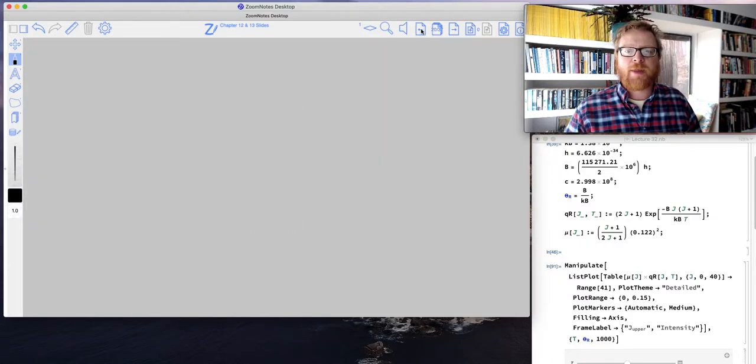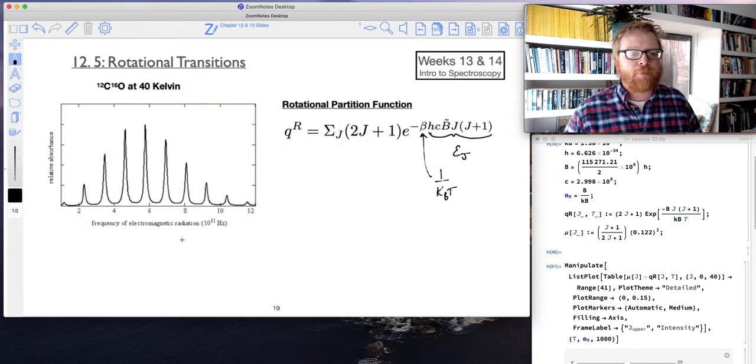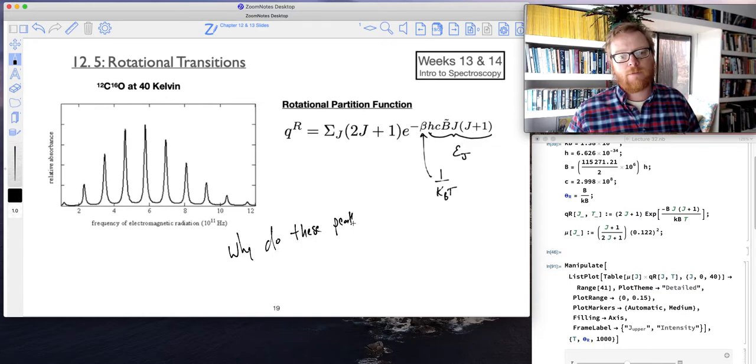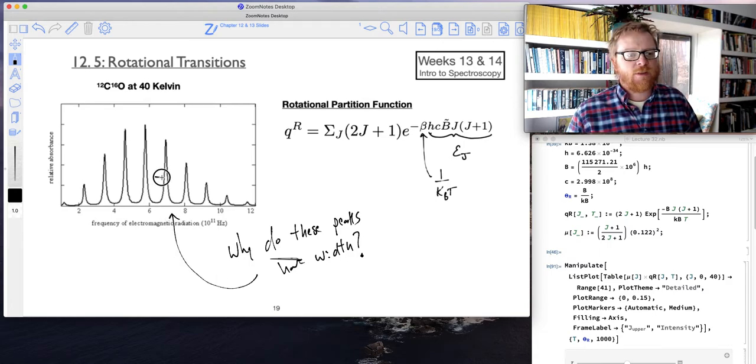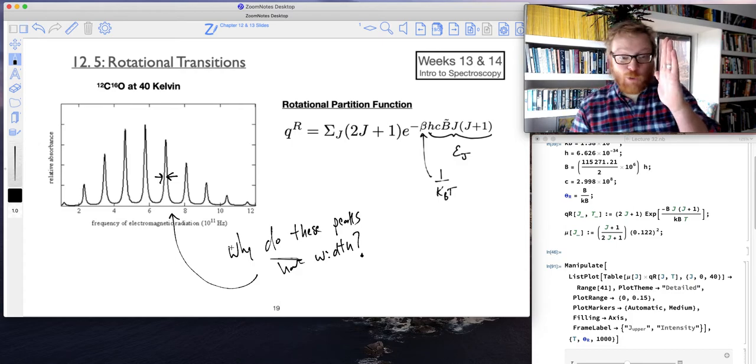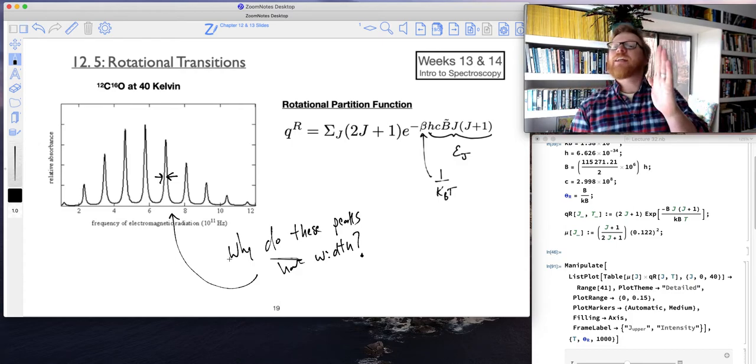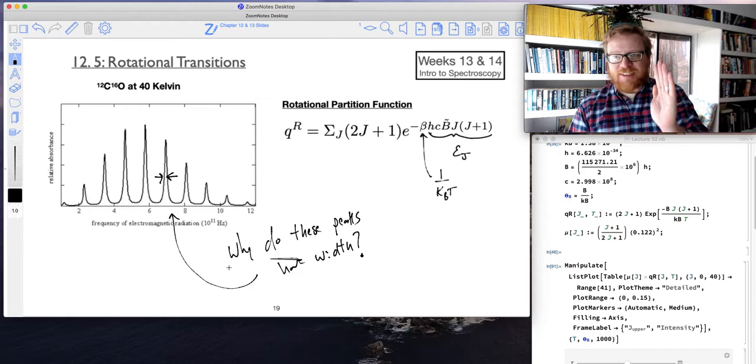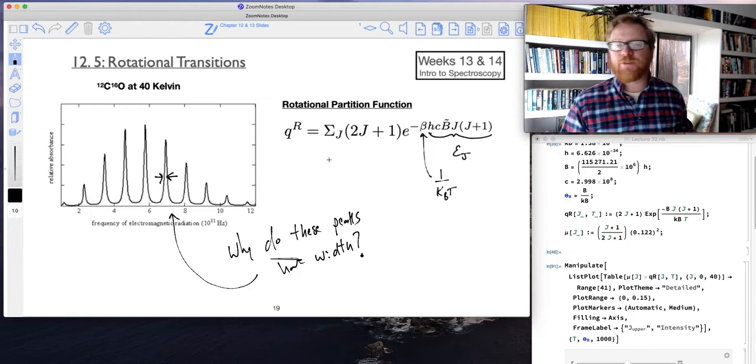I'm going to move past the rotational, and now I want to talk about why the width. Why do these peaks have width? So we always talk about how in quantum mechanics, these transitions are exactly quantized. So if they're exactly quantized, then why aren't they infinitely narrow, a single peak with no width? Why do they have some width?